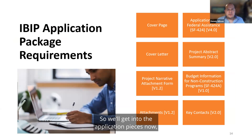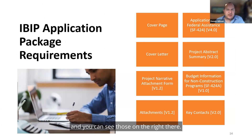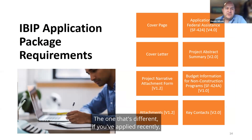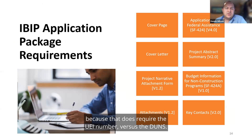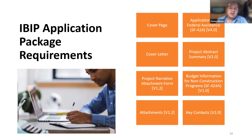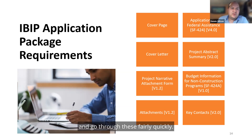Now we'll get into the application pieces. The one that's different if you've applied recently is the SF-424 — it is now version 4, not version 3. Make sure you're using version 4, because it requires the UEI number versus the DUNS. We'll break these up and go through them fairly quickly.